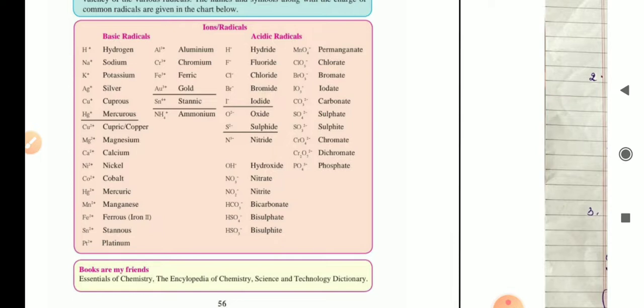Acidic radicals: H- (hydride), F- (fluoride), Cl- (chloride), Br- (bromide), I- (iodide), O2- (oxide), S2- (sulfide), N3- (nitride), OH- (hydroxide), NO3- (nitrate), NO2- (nitrite), HCO3- (bicarbonate), HSO4- (bisulfate), HSO3- (bisulfite), MnO4- (permanganate), ClO3- (chlorate), BrO3- (bromate), IO3- (iodate), CO32- (carbonate), SO42- (sulfate), SO32- (sulfite), CrO42- (chromate), Cr2O72- (dichromate), PO43- (phosphate).